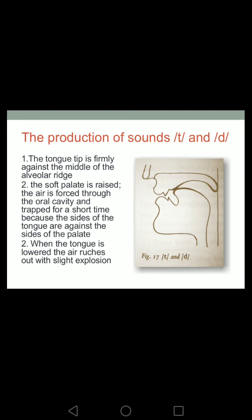The next group of plosive consonants is /t/ and /d/. Again we start with the production of the sounds. The first step is that the tongue tip is firmly against the middle of the alveolar ridge. Steps one and two occur almost simultaneously. The order of the steps is important — we follow a scientific study. So step one: the tip of the tongue firmly touches the middle of the alveolar ridge.